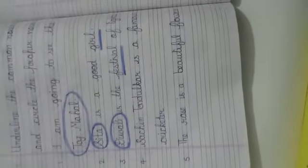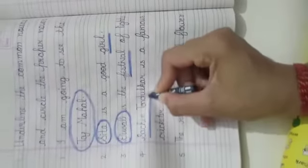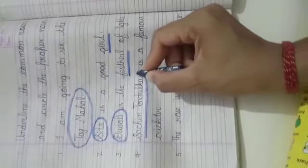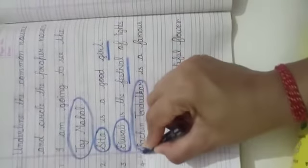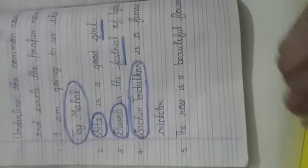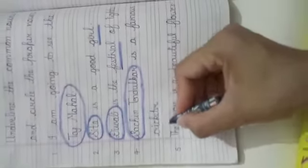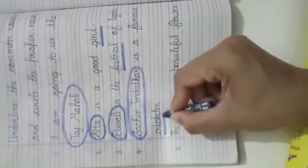'Sachin Tendulkar is a famous cricketer.' Here, Sachin Tendulkar is a special name of a cricketer, so this is a proper noun. We will circle it. And cricketer, that can be any, so we will underline it.